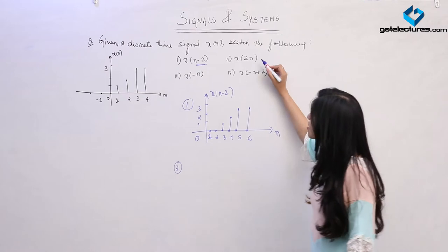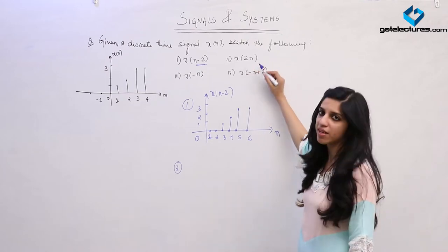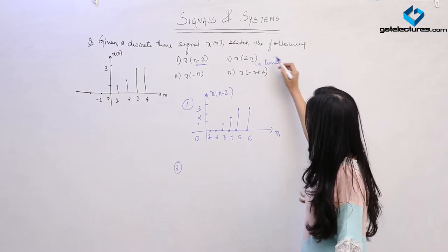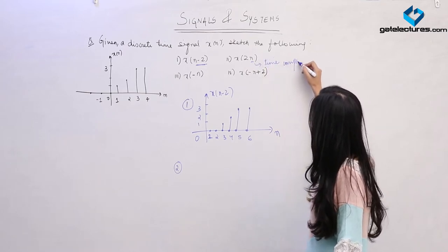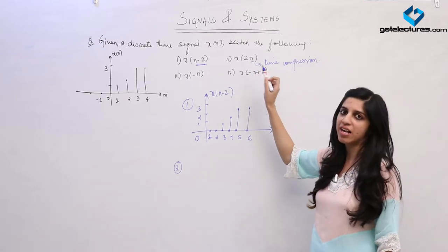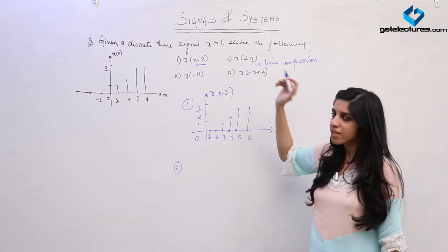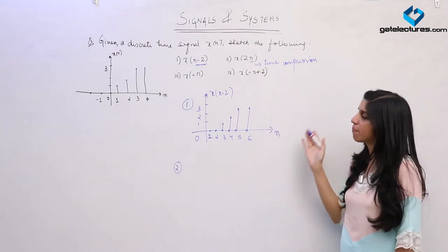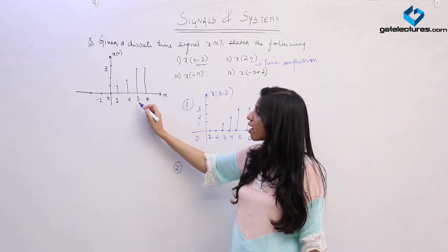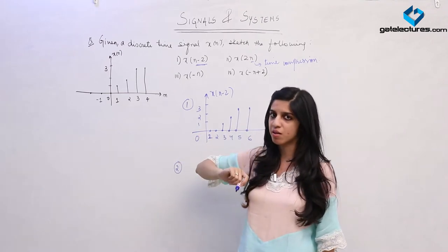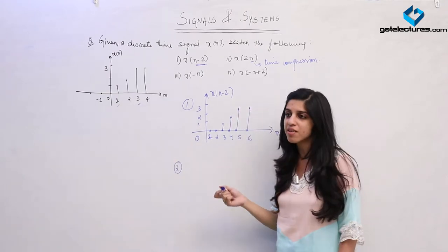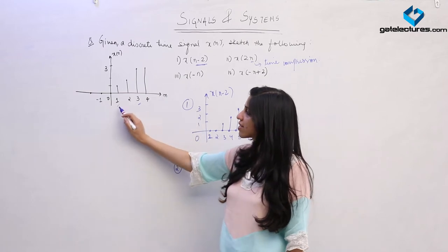Now look at the next part — this is time scaling. We have multiplied n by 2, so this is time compression, to be precise. What happens is each value of n is going to get divided by 2. In time compression, when you divide all these values by 2, some of them are not going to be integers anymore. These odd values — 1/2 and 3/2 — are not going to be integers, and we are going to lose those samples.